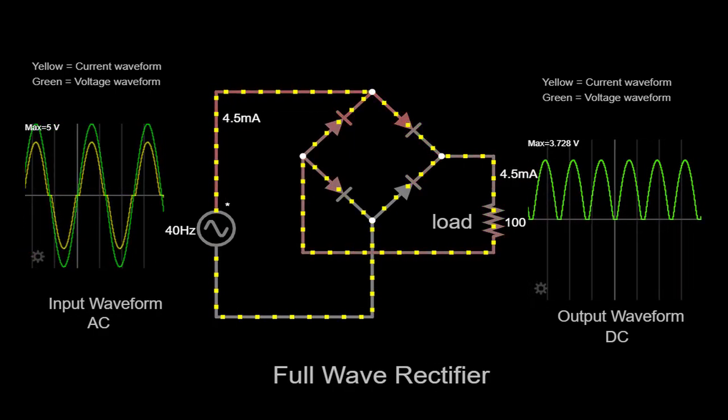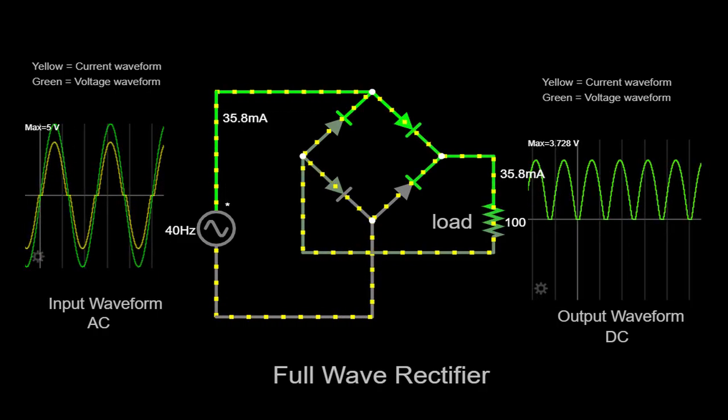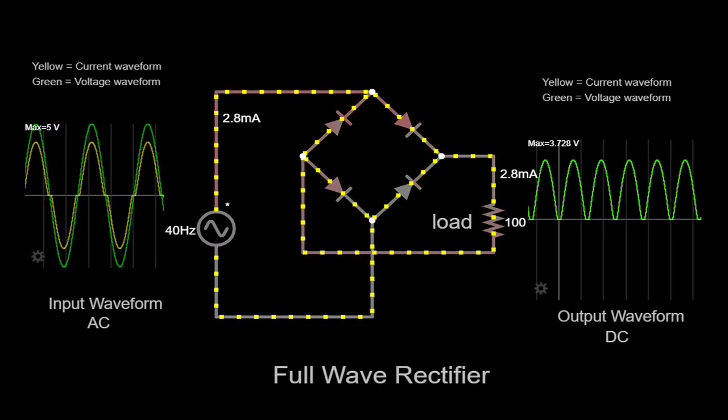However, during the negative half cycles of the input, the diodes block the current, resulting in a brief period of zero voltage on the output waveform.